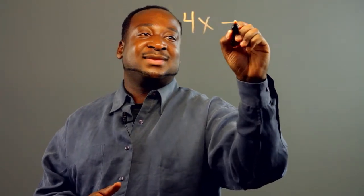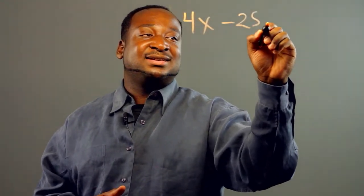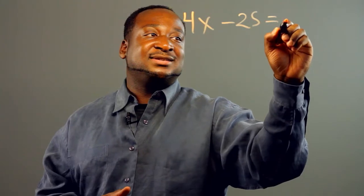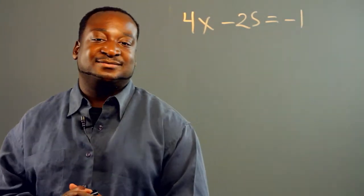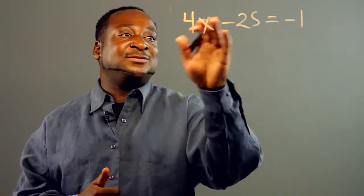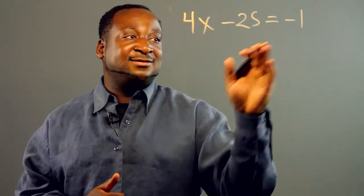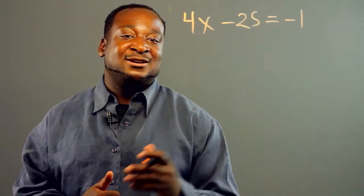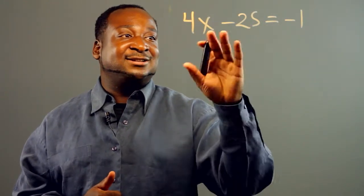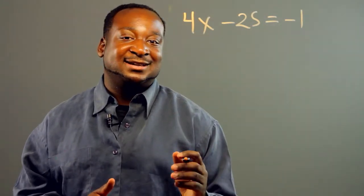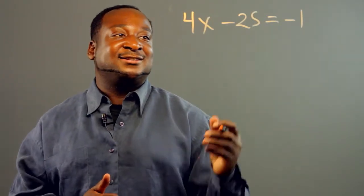Let's say we have the equation 4x minus 25 equals negative 1. Now just look at both sides as numbers, and since the left side and the right side are numbers, we can do the same thing to both sides and it won't affect the value.